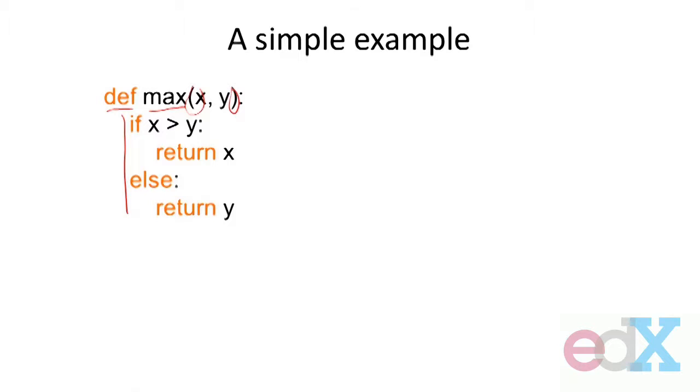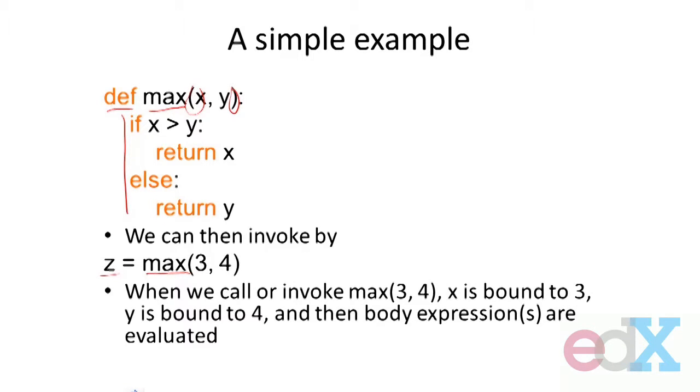We'll come back to return in a second, but let's just think about how would we use this. So we invoke this, or we call it, as we say, by simply using this sort of an expression. And we say, I want to bind z to, and there's the assignment statement, the value that this function max gives me on these arguments 3 and 4. When we do that function call, when we invoke max of 3 and 4, we literally get the values of these expressions. And those are easy in this case, they're just numbers.